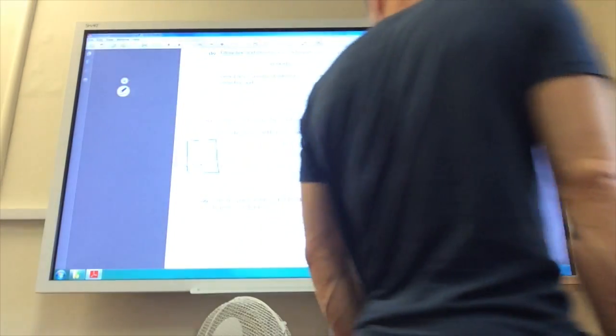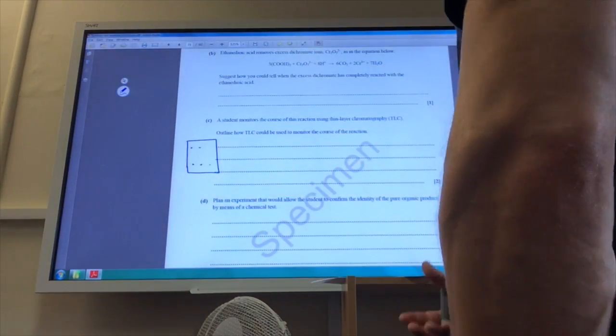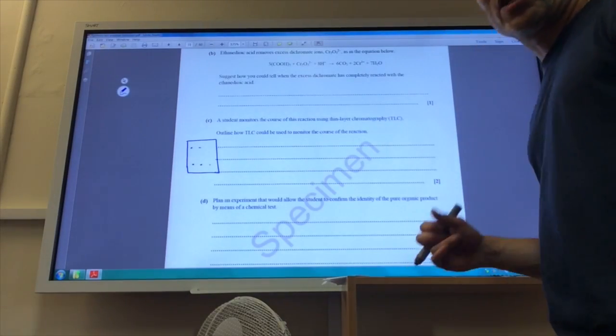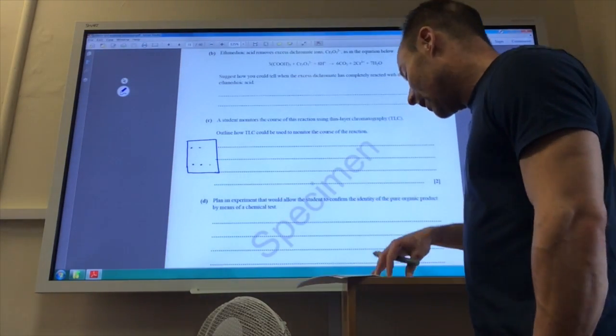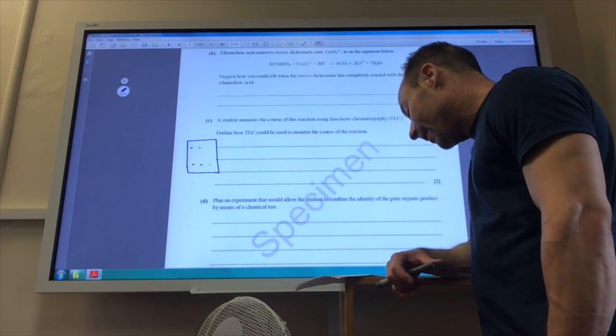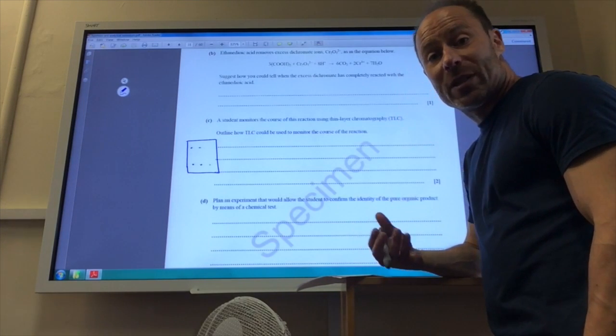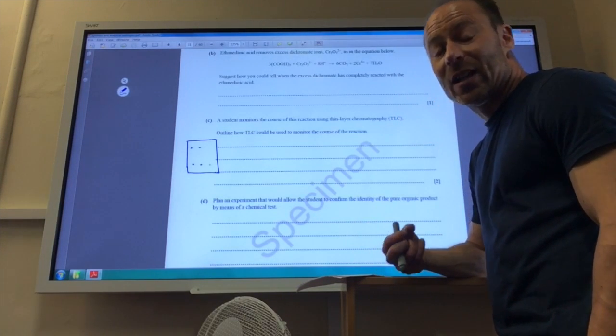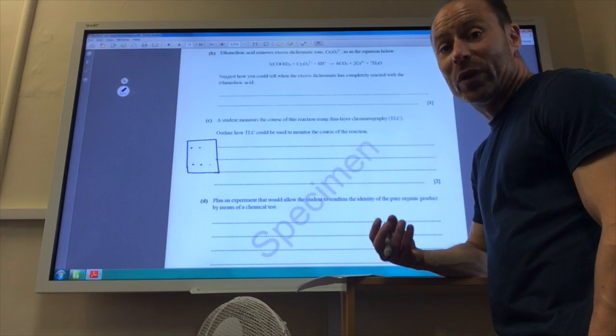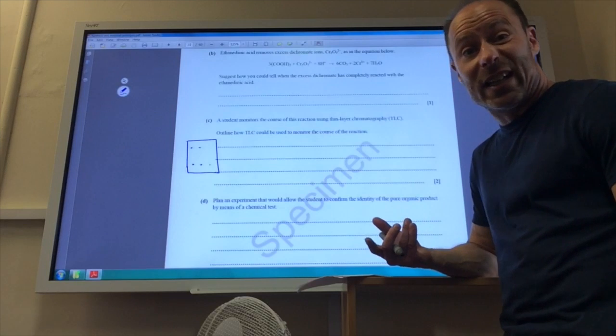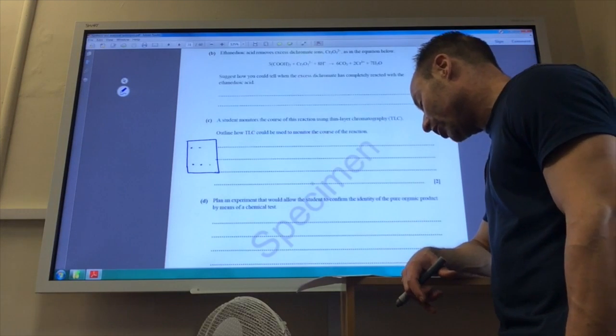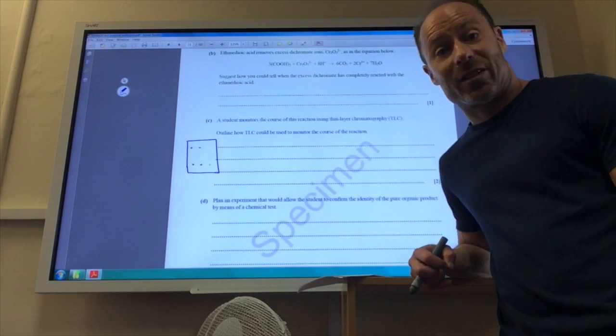Plan an experiment to allow the student to confirm the identity of the pure organic product. This is where you'd use 2,4-dinitrophenylhydrazine. You would get an orange precipitate which you would recrystallise and then you would measure its melting point and then compare that melting point against known values in a data book to make sure that you have prepared cyclohexanone.